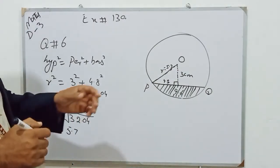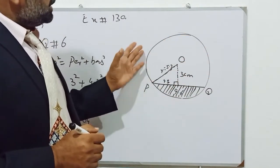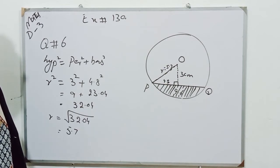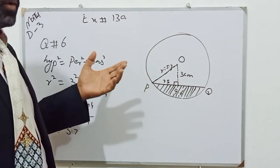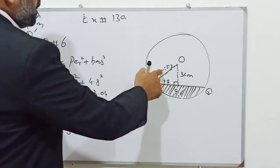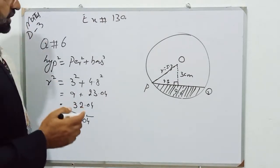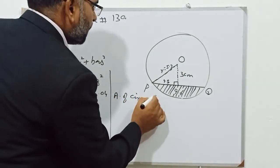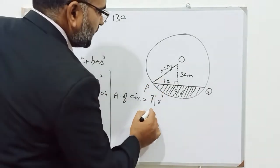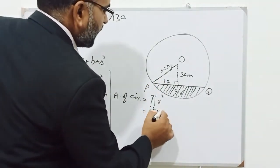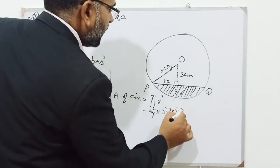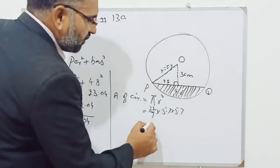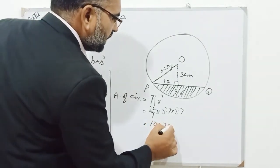Now students, we will find the area of the circle using the formula: area of circle equals pi r square, where the value of pi is 22 over 7, and R is 5.7 centimeters. So area of circle equals (22/7) multiplied by 5.7 multiplied by 5.7. Use your calculator to find the value, and you will get 100.7 centimeters square.